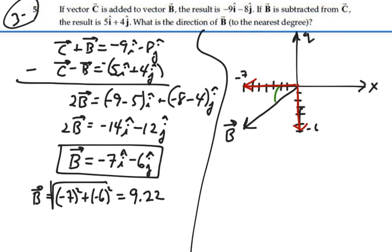But we want to find this angle here. Taking the inverse tangent of the magnitudes of our vectors, Y over X. So inverse tangent of 6 over 7 equals 40.6 degrees.